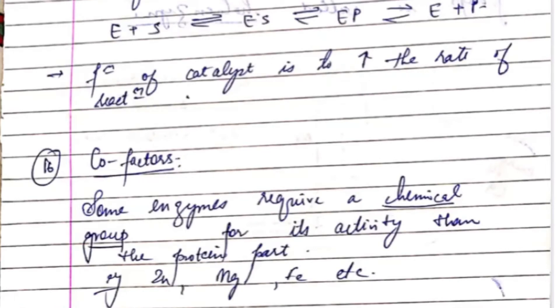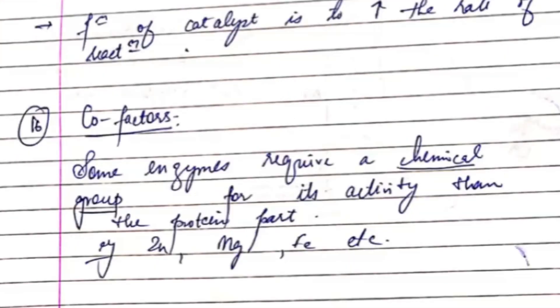The enzyme reaction is: Enzyme + Substrate → Enzyme-Substrate complex → Enzyme-Product complex → Enzyme + Product. The function of a catalyst is to increase the rate of reaction.